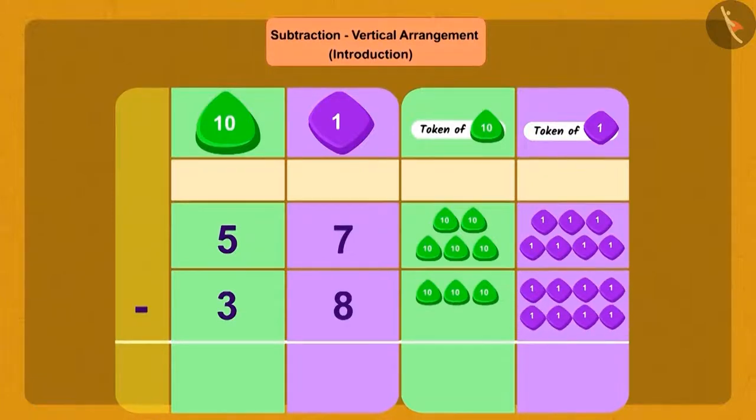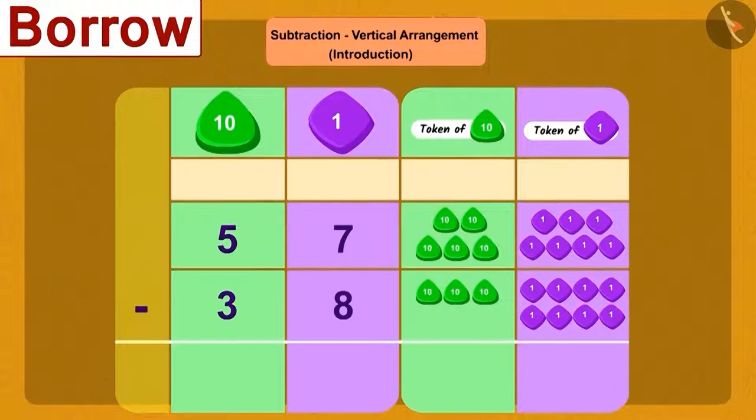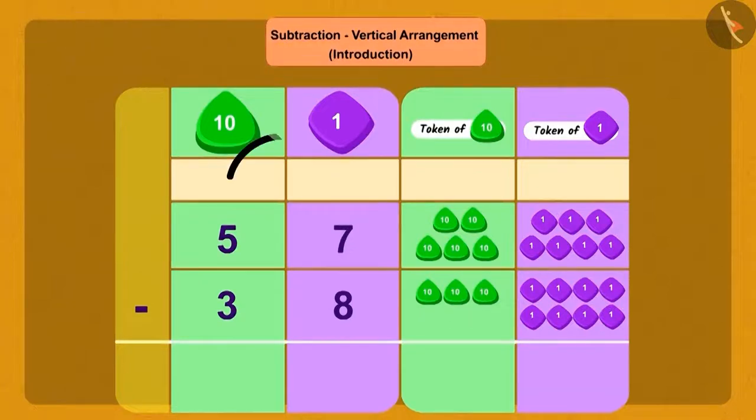To know this, we will have to subtract 38 from 57. Children, can we subtract 8 ones from 7 ones? No. So what do we do now? We will borrow 1 ten from 5 tens and we will add 10 ones to 7 ones.